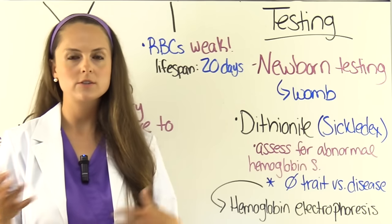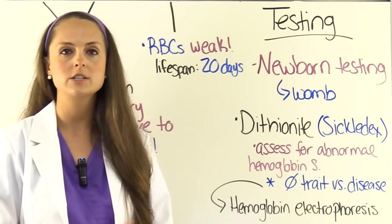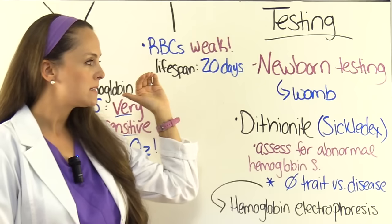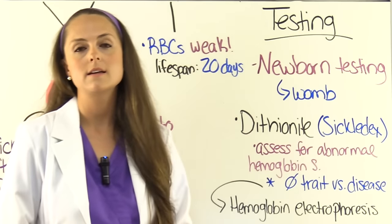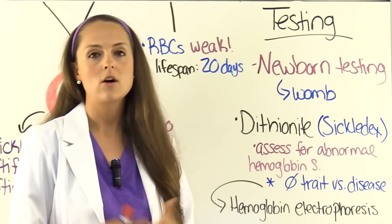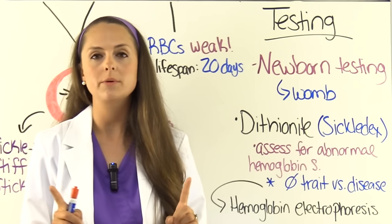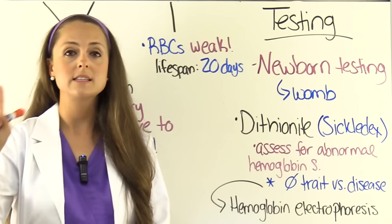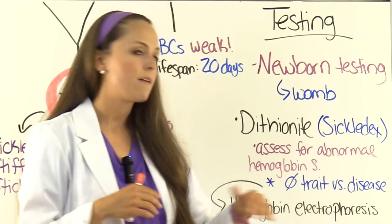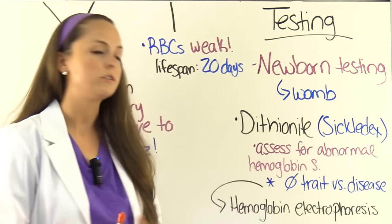As a nurse, you want to be familiar with tests for sickle cell anemia. Most hospitals include it as part of newborn screening. Babies still in the womb can be tested using amniotic fluid. One common test is the thionite test, also called Sickledex — it assesses for abnormal hemoglobin, but it cannot differentiate between sickle cell trait (hemoglobin AS) and full sickle cell disease (hemoglobin SS). For that, a hemoglobin electrophoresis is needed.